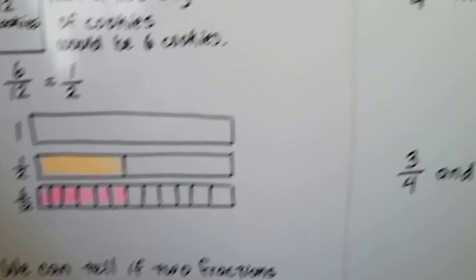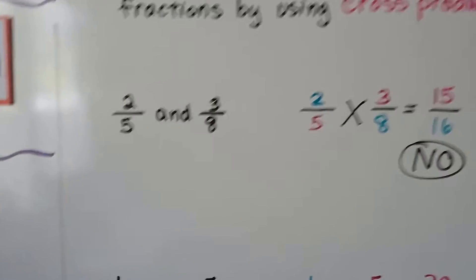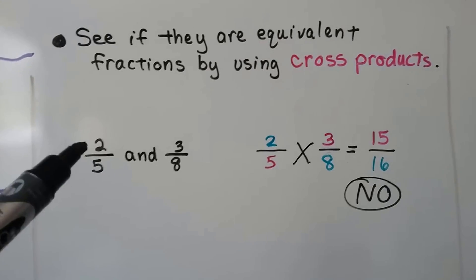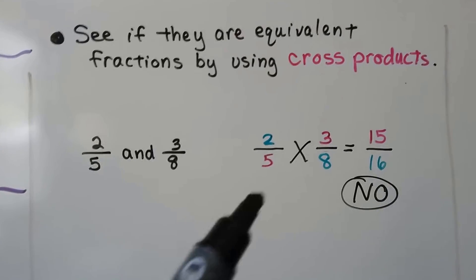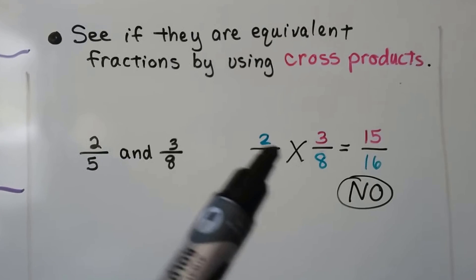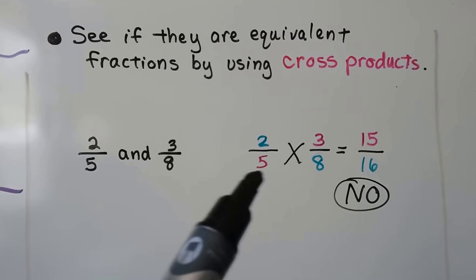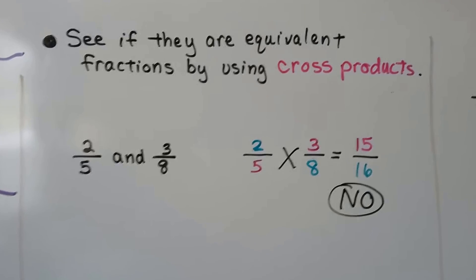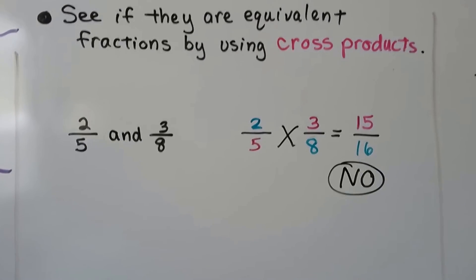We're going to do several examples. We're going to see if they're equivalent fractions by using cross products. So we have two-fifths and three-eighths. We multiply the two to the eight and get sixteen, and the five to the three and get fifteen. So no, they are not equivalent fractions.